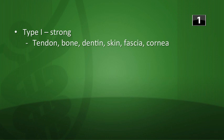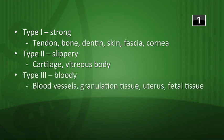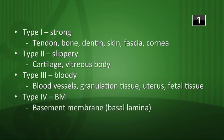Type 1 is the strong type, found in tendon, bone, dentin, skin, fascia, and the cornea. Type 2 is your slippery type, found in cartilage and the vitreous body. Type 3 is the bloody type, found in blood vessels, granulation tissue, the uterus, and fetal tissue. Type 4 is BM — for the basement membrane, also known as the basal lamina.